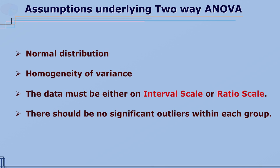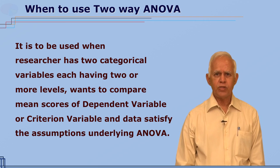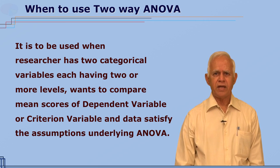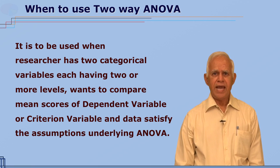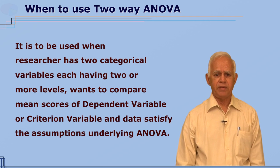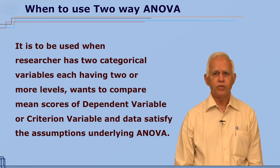Assumptions for the two-way ANOVA are the same as those for one-way ANOVA. The two-way ANOVA is to be used only if there are two variables, each variable must have a minimum of two levels, and there is one dependent variable or criterion variable. Then the researcher can analyze the data with the help of two-way ANOVA.